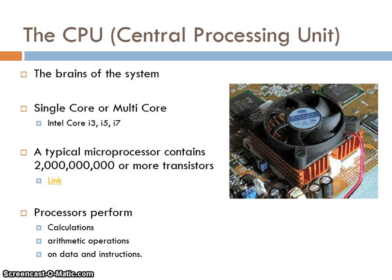The CPU — central processing unit, sometimes summarised as the processor — is the brains of the computer system. Some example processors are single core, or multi-core such as dual core or quad core. Examples you may have heard of are Intel i3, i5, and i7. Typical processors contain two billion or more transistors. The key job of a processor is to perform calculations — arithmetic — and it does this on data and instructions.